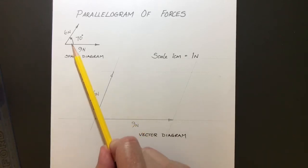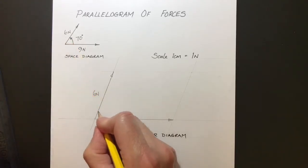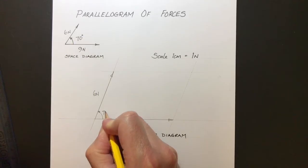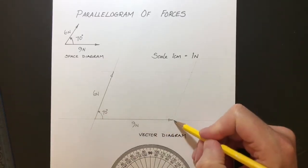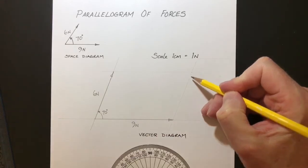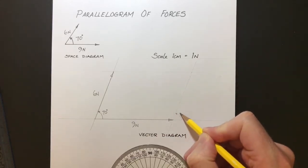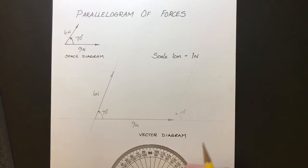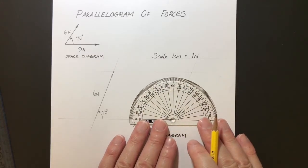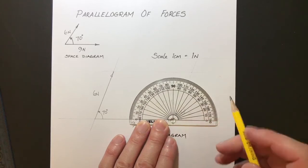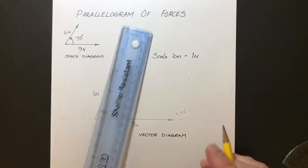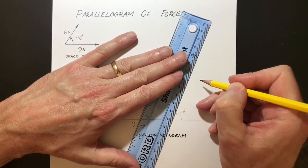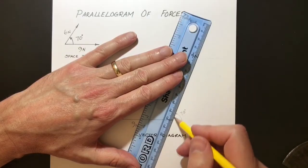Now we know from the space diagram, the angle is 70 degrees. So there's 70 degrees there to show us. So if we take our protractor and go to the other end of the nine Newton line, we can create a parallel line there that is also 70 degrees. So let's have a look here. Let's put our protractor on the paper there and then go round to 70 degrees, place a mark there and draw a faint line. There we go.